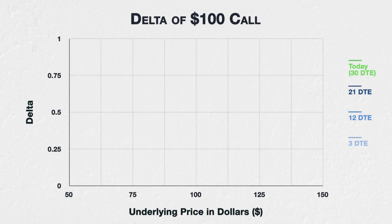Another variable that has a major influence on delta, particularly for in-the-money and out-of-the-money options, is how much time is left before the option expires. Even if all other things remain equal, the simple passage of time will also have an effect on the delta of an option. Similar to how higher implied volatility implies a higher chance of price moving further, more time, or higher DTE, gives price more time to move further, and so has a similar effect on option deltas as higher implied volatility.